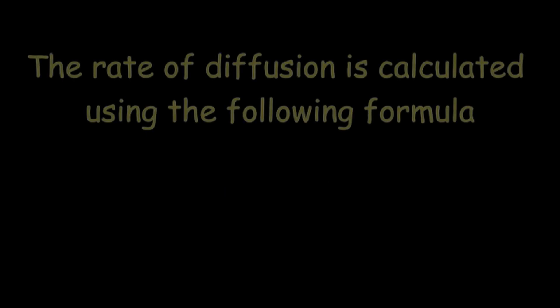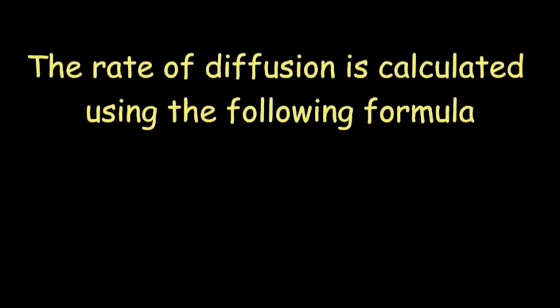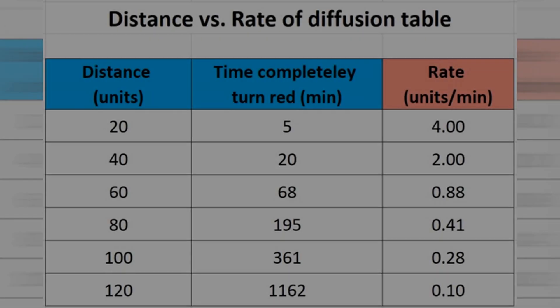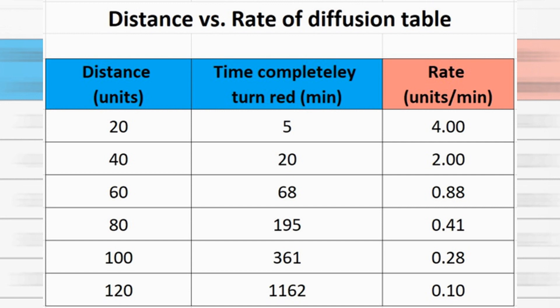It is now time to process our raw data, that is the distance and the time we have recorded in the table. The rate of diffusion is calculated using the following formula: rate equals to distance divided by time. After substituting each of my data set into the formula, I recorded the rates of diffusion in the right side of the table.